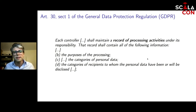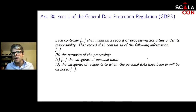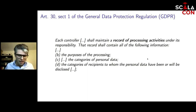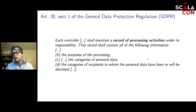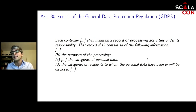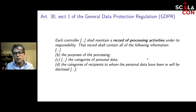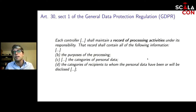One of the things — Article 30 — requires each controller to maintain a record of processing activities under its responsibility. This means that if you are a company and you handle personal data, you need to make a list of all the processing activities you do: getting customer data, storing it, retrieving it for customer service, deleting it, or handling employee data. You are required to list those activities and judge whether they are in compliance with GDPR.